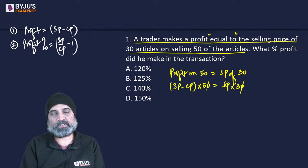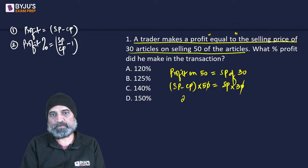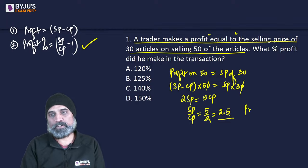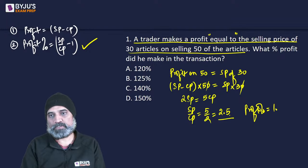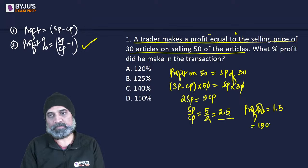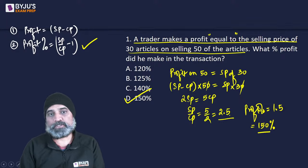We have (SP − CP) × 50 = SP × 30. Bringing all SPs to one side and CPs to the other, we get 2 × SP = 5 × CP, so SP/CP = 5/2 = 2.5. Putting this into the formula: profit percentage = 2.5 − 1 = 1.5, and multiplying by 100 gives 150%. This results in option D.